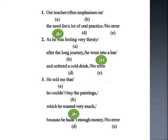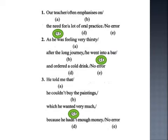Study of prepositions is a prerequisite if you want to do well in spotting the errors. So the answer to question one is C: 'the need of a lot of oral practice.' For the second question: 'As he was feeling very thirsty, after the long journey, he went into a bar and ordered a cold drink.' The answer is C. Why? 'Into' shows movement or motion — for example, 'he jumped into the river.' So the appropriate preposition here should be 'in,' not 'into.'